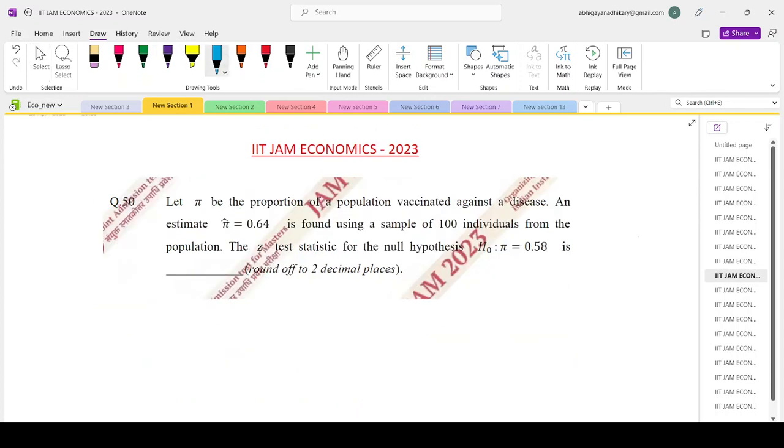Now let us come to question number 50 of the Jam Economics paper 2023. Let pi be the proportion of the population vaccinated against a disease. An estimate pi hat equals 0.64 is found using a sample of 100 individuals from the population. The Z test statistic for null hypothesis H0 pi equals 0.58 would be how much? The Z statistic is the standard normal distribution.